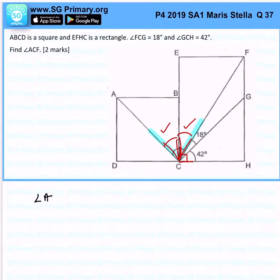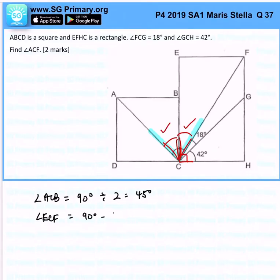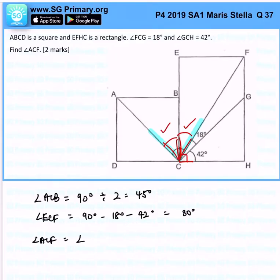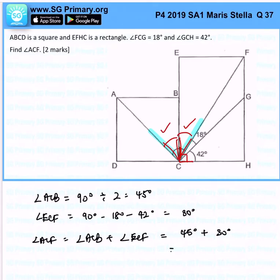Angle ACB is simply 90 divided by 2, which is 45 degrees. Angle ECF will be 90 degrees minus 18 minus 42, and that will leave us with 30 degrees. Angle ACF is the same as angle ACB plus angle ECF, and we get 45 degrees plus 30 degrees equals 75 degrees.